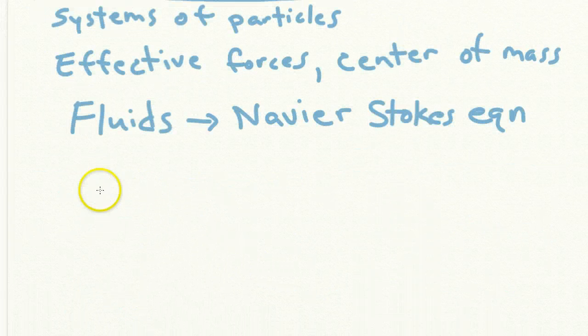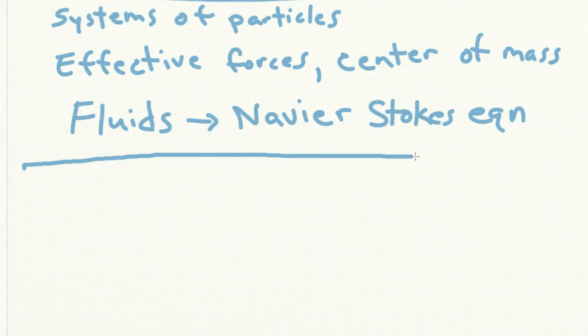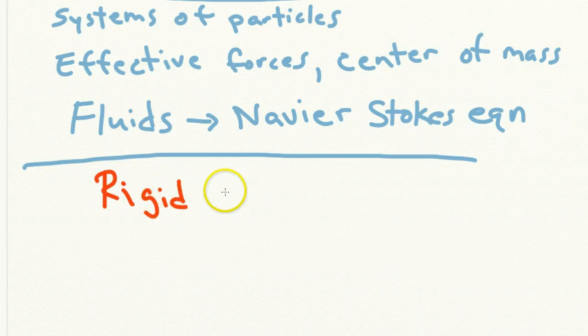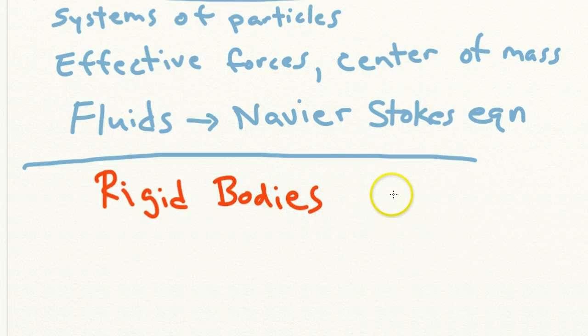From there, we'll move into looking at rigid bodies. So rigid bodies, initially we're talking about just point bodies. And when you talk about rigid bodies, you have to talk about rotation.